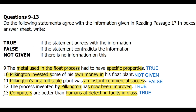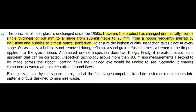Question 12: computers are better than humans at detecting faults in glass. From paragraph G, inspection technology allows more than 100 million measurements a second to be made across the ribbon, locating flaws that the unaided eye would be unable to see. This confirms that computers are better than humans at detecting faults in glass. This statement is TRUE.